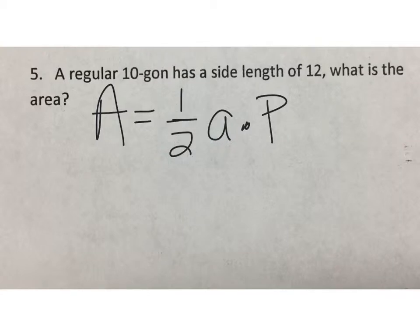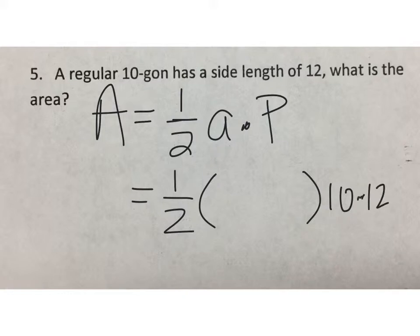Now we know some information here. We know what the perimeter is. That's pretty easy. The perimeter is 10 sides times 12. Every side is 12 units long, so that has a perimeter of 120.